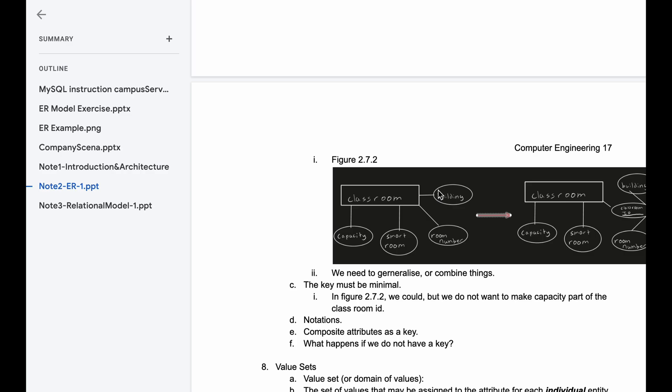To make a key, we need to generalize or combine things. So looking at the image on the right, we have our classroom, capacity, smart room, that didn't change. But what we can combine is our building and our room number. So looking at our building and room number, it's a little bit small, but inside of here, we have a classroom ID. And this classroom ID is the key, because we've identified the building and room number.